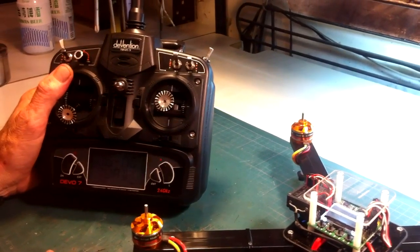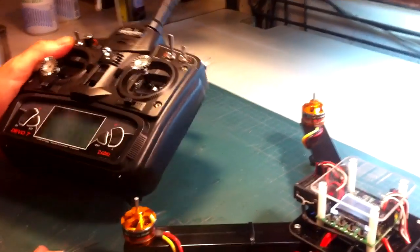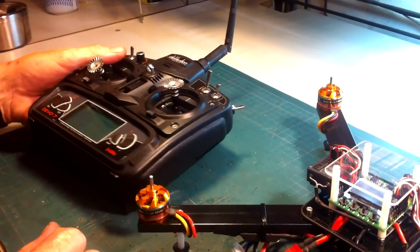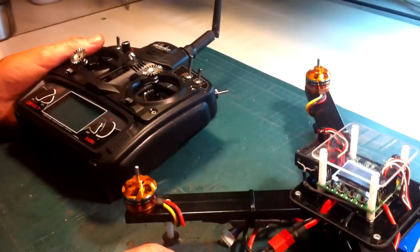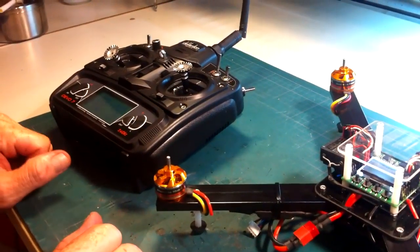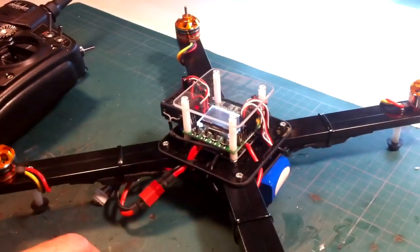And your endpoints for aileron, elevator, throttle, and rudder should be at 100%. And the rest of the changes that you're going to make to alter the way this quad flies has nothing to do with the radio. It's all going to be done with the LCD display.